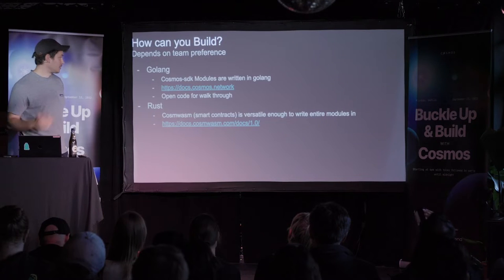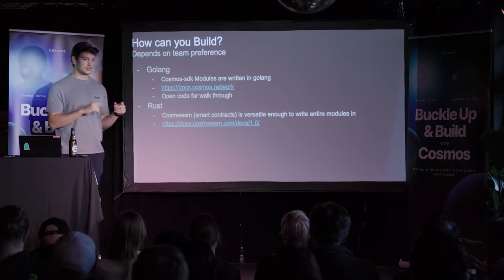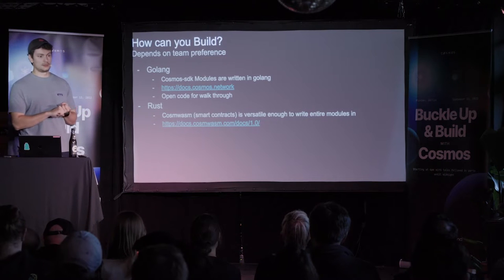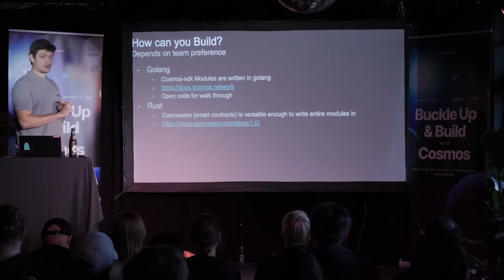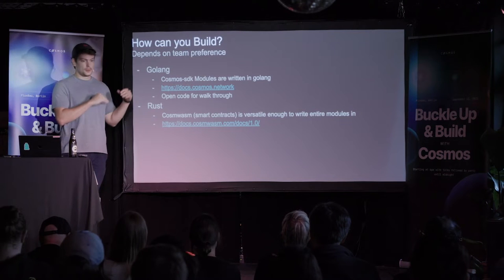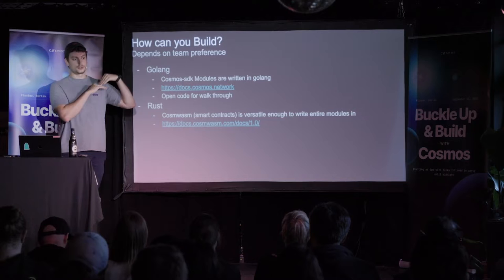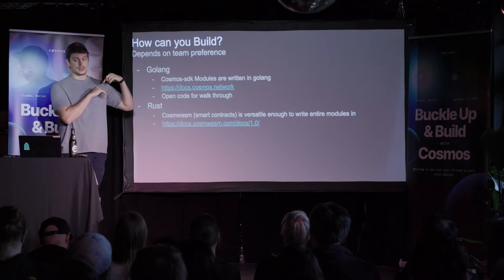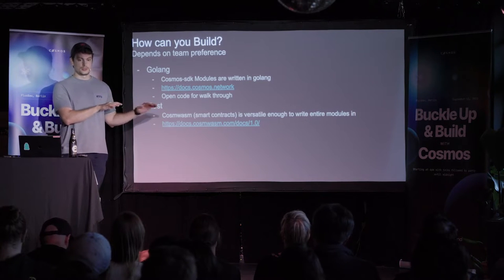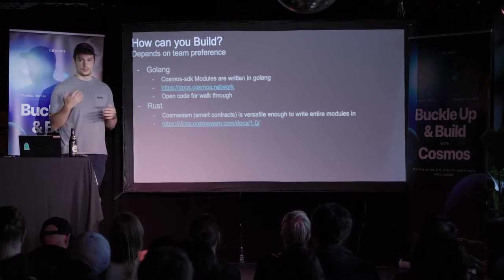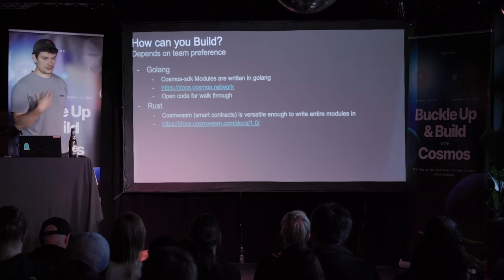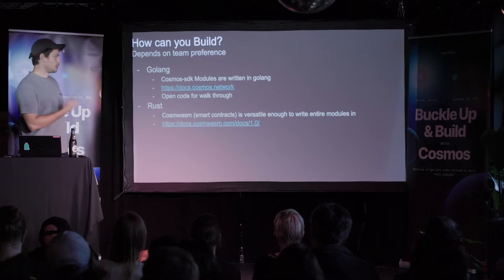How can you build it today? The two highest touch points are Golang for writing a native Cosmos SDK module, and Rust via CosmWasm — a smart contracting layer similar to the Ethereum EVM — where you can write CosmWasm smart contracts that call directly into native Cosmos SDK modules. There are examples of teams removing 80% of the SDK modules and writing everything as a smart contract; T-grade wrote their proof-of-existence as a CosmWasm contract calling directly into Tendermint for validator set updates.